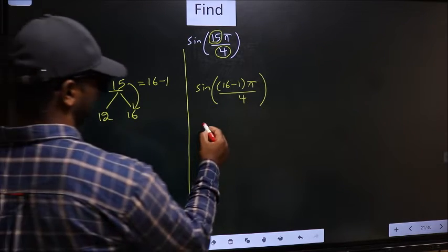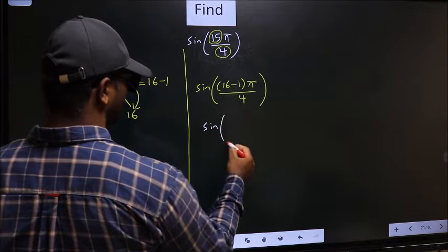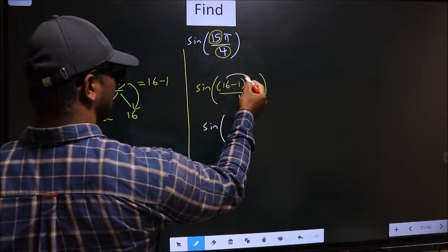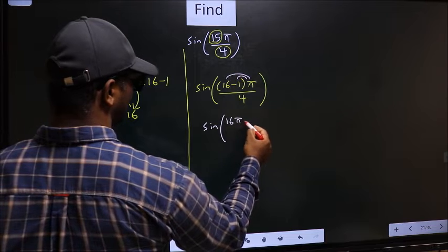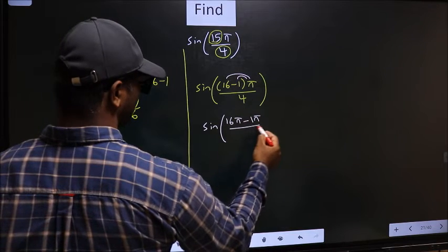Next, sine. Now you should open up the brackets. You get 16π minus 1π by 4.